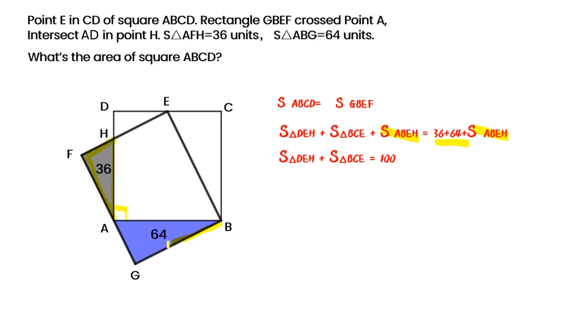Obviously, triangle AFH similar to triangle BGA. According to the ratio theorem of similar triangles, we can get AH squared over AB squared equals to 36 over 64, is 9 over 16. So we can get AH over AB equals to 3 over 4.